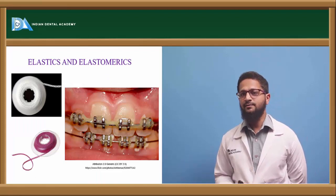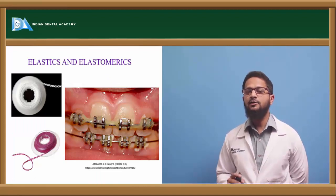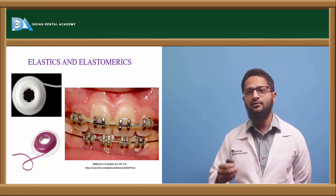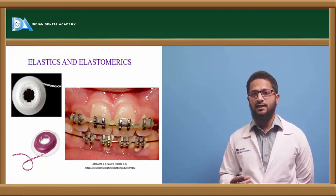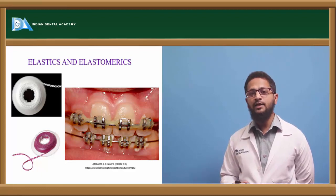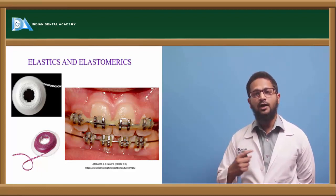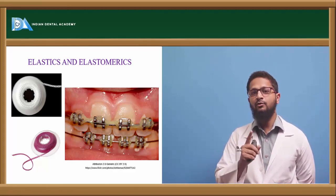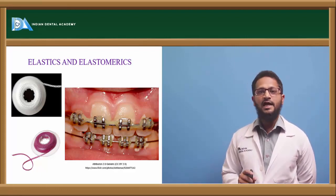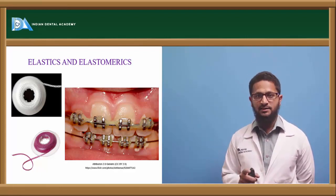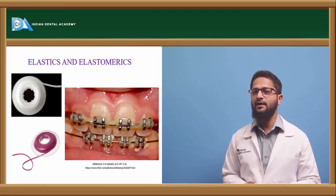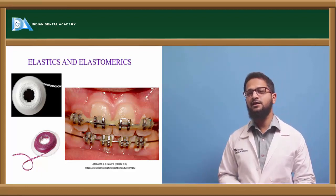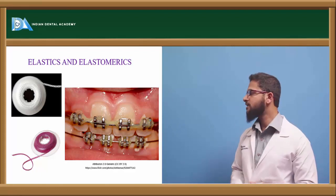Various types of elastics are used in fixed appliance technique. Class 1 elastics, also called intra-arch elastics, are mostly used for retraction purposes. Class 2 elastics are inter-arch elastics used in Class 2 cases, running from the lower molars to the upper canines. Class 3 elastics are also inter-arch, running from upper molars to lower canines. Class 4 elastics, or box elastics, are used in open bite cases for extrusion of the anteriors. Elastics are also used in the form of separators, e-chain, and e-thread.